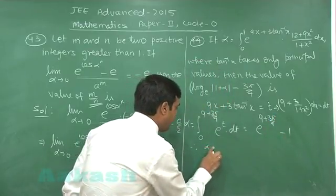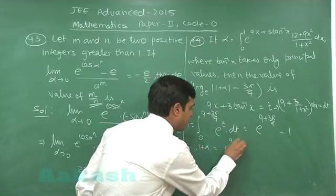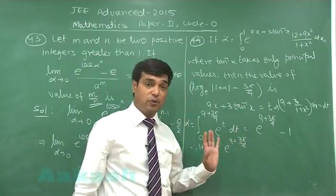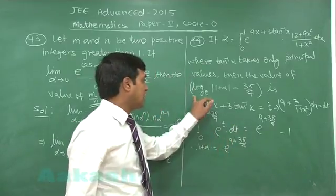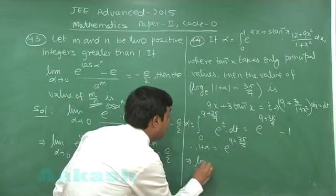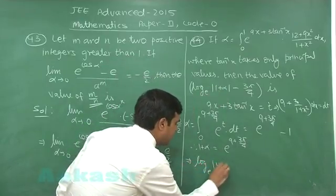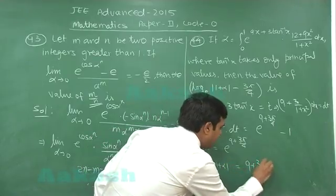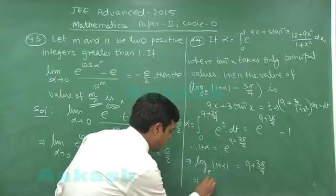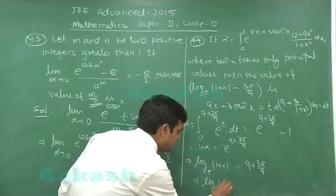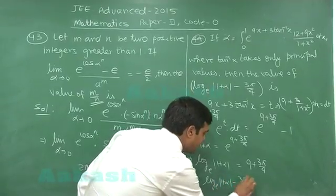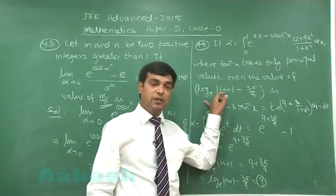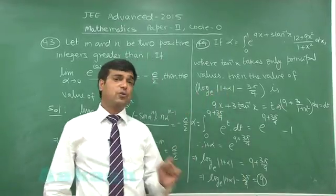Therefore, 1 plus alpha is e raise to the power 9 plus 3 pi by 4. My requirement is log of this term. Log e base 1 plus alpha mod is equal to 9 plus 3 pi by 4, or log e base 1 plus alpha mod minus 3 pi by 4 is 9. So, the correct answer for this 44th is 9. Let us go for the next one.